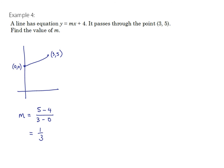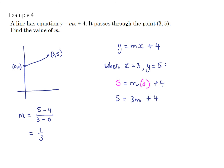A more mathematically flexible method — one that works regardless of where the unknown appears, even in a quadratic equation — is substitution. Since the line passes through (3, 5), when x equals 3, y equals 5. Substituting into y equals mx plus 4: 5 equals 3m plus 4. Subtracting 4 from both sides and dividing by 3 gives m equals one third.